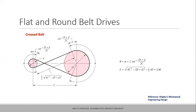The angle of wrap matters because it determines how much belt surface is in contact with the pulley. More contact means more frictional force available for torque transmission. A higher angle of wrap gives more torque transmitting capacity. The angle of wrap is calculated from geometric relationships using the pulley diameters and center distance via trigonometric formulas, with different expressions for open belt and cross belt configurations.